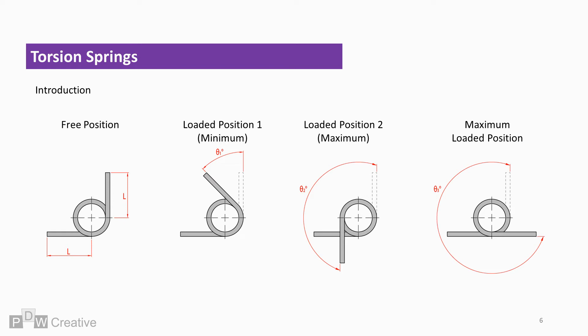It is important that loaded position 2 does not exceed the maximum loading angle. If it does, then the spring will become overstressed. It could immediately fail or may weaken, or in combination it may weaken and then fail over time.